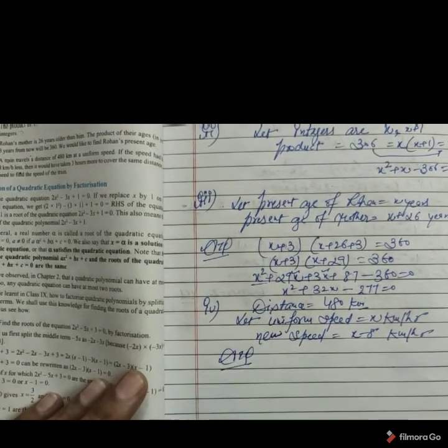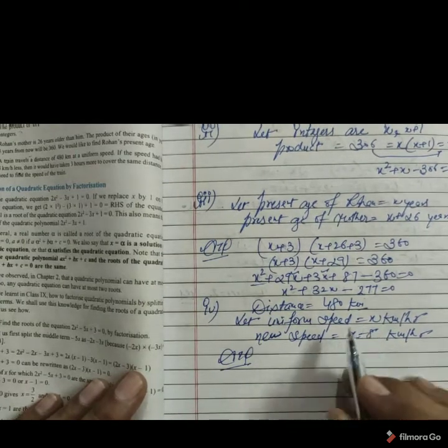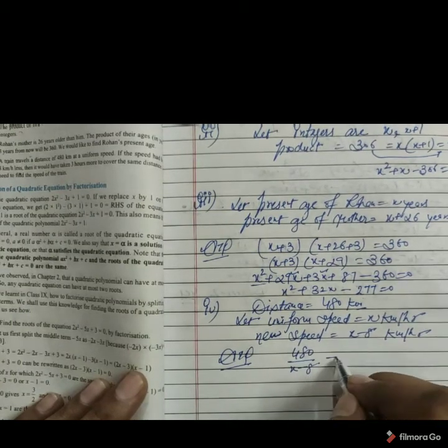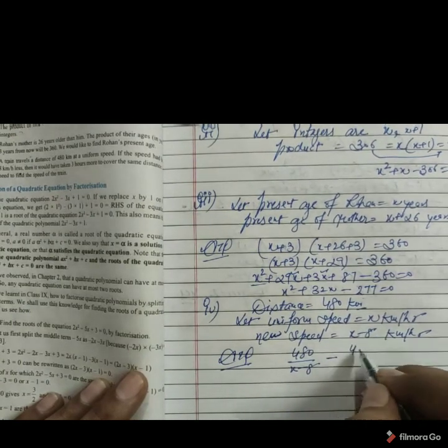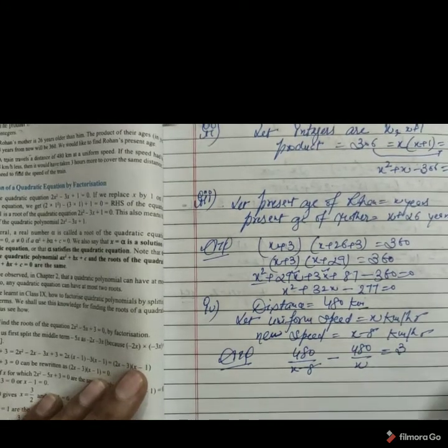So according to question, if we decrease the speed, time should be more. So according to this speed, time taken become 480 by x minus 8, means distance by speed, minus, original time, distance by speed, it is given by 3 hours. Now we have to simplify this one.